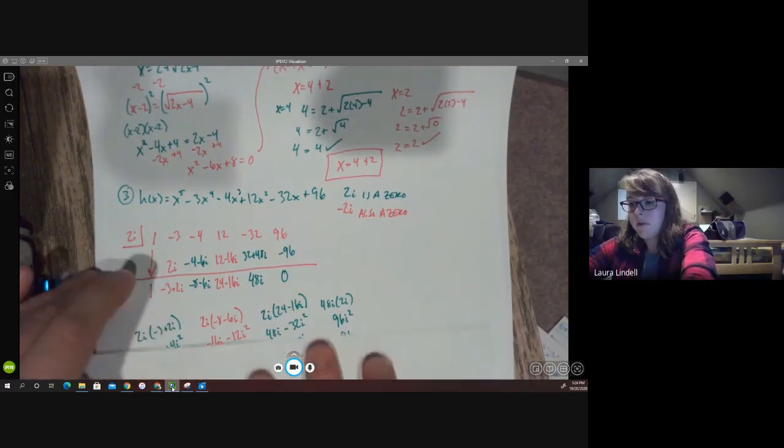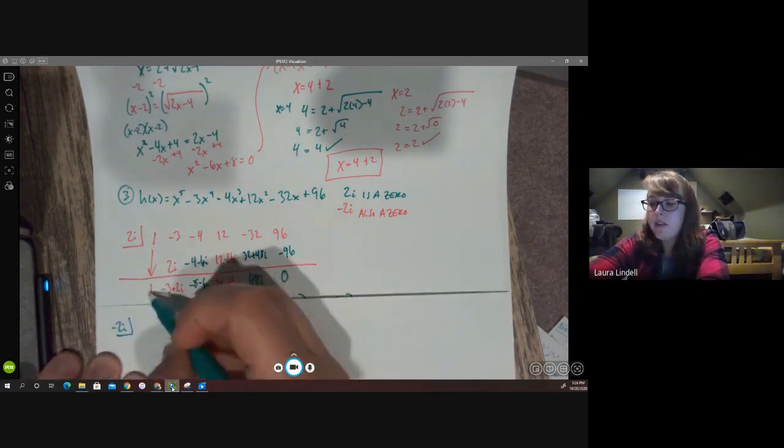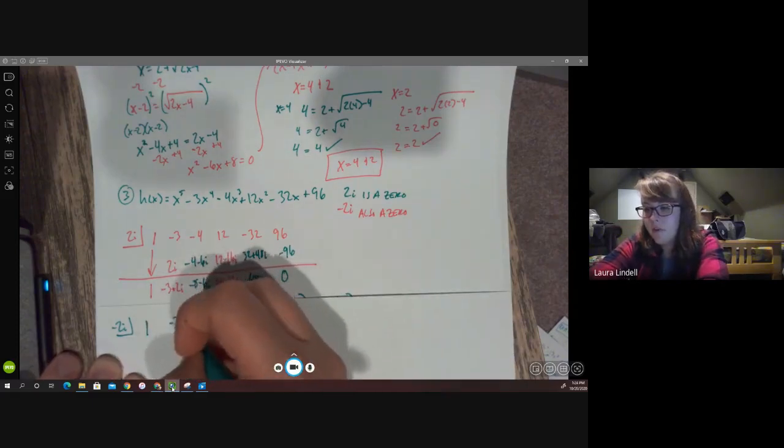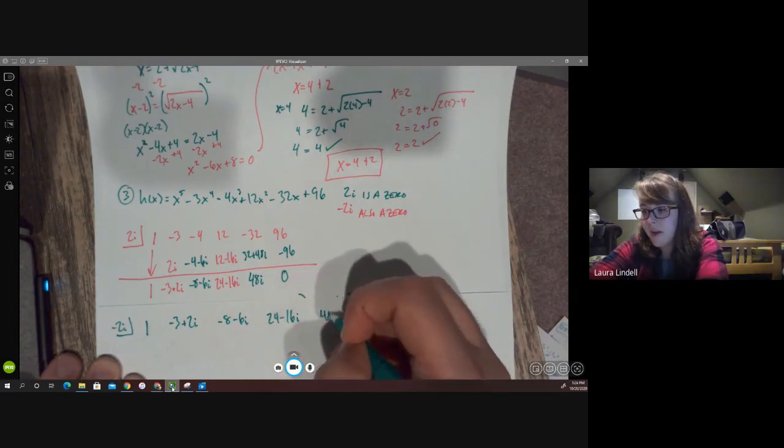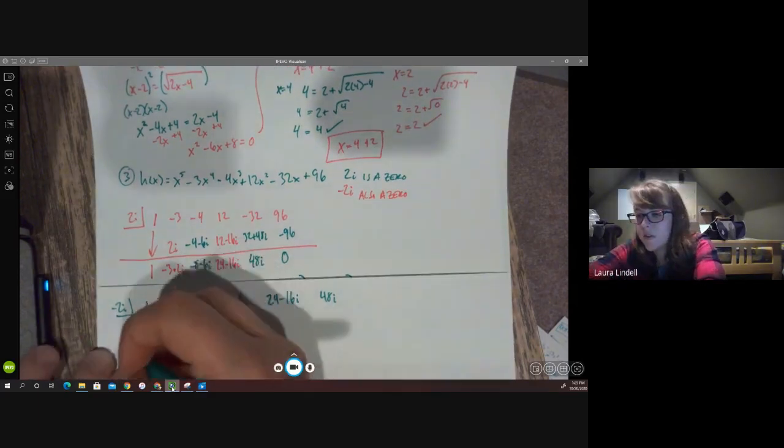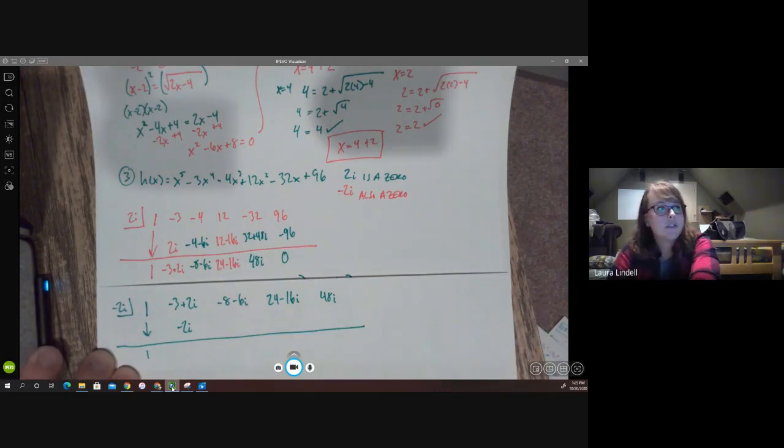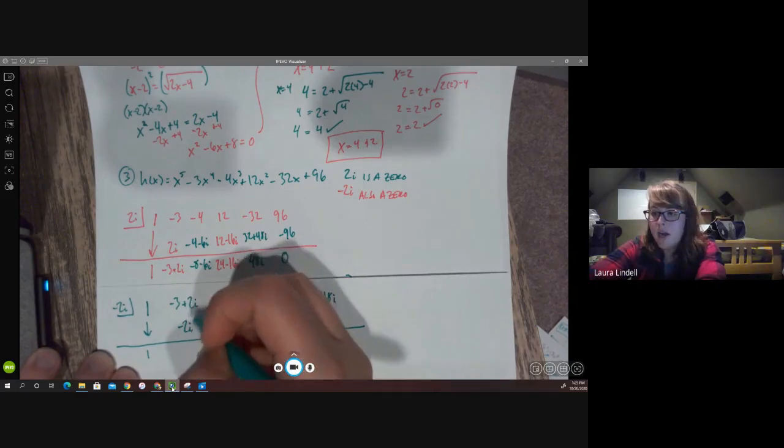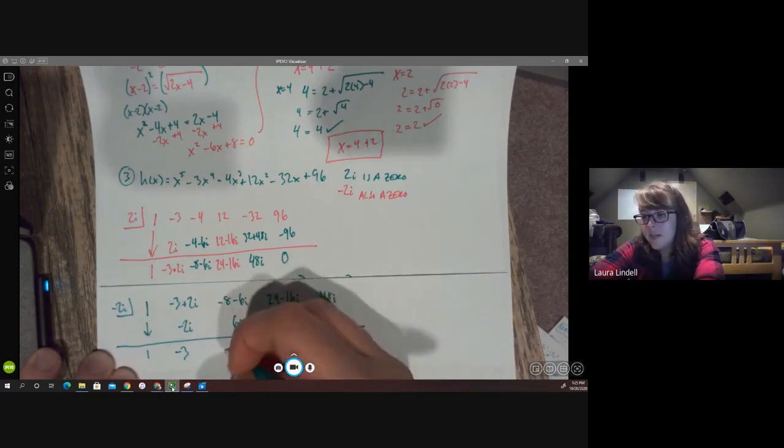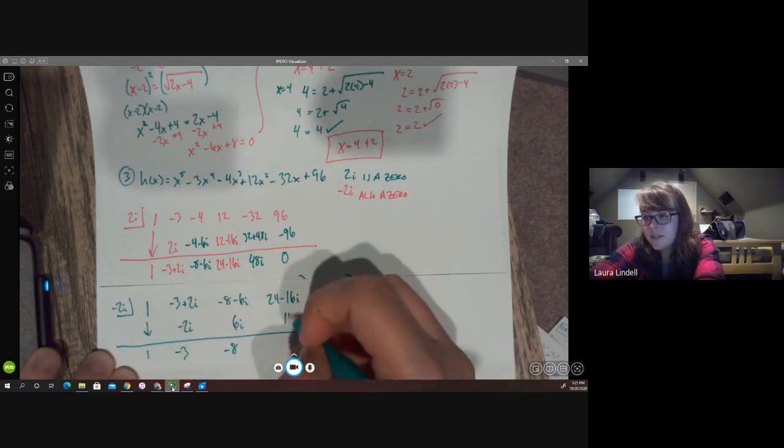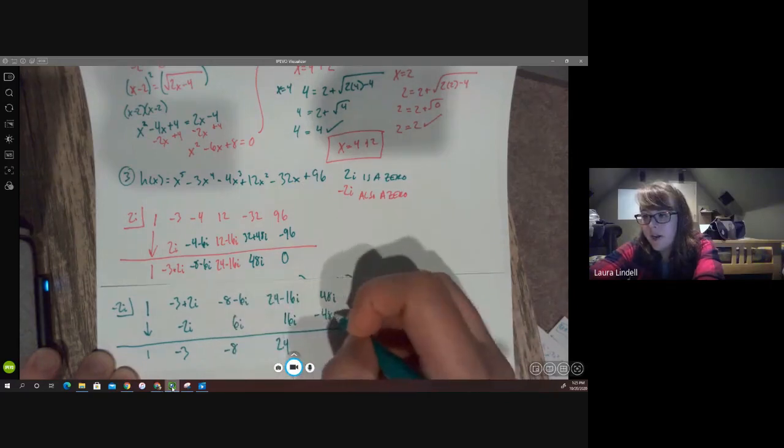So that's the first part. We found our new coefficients after factoring, or after dividing out that 2i. So now we're going to do it with negative 2i in the box instead. Let me grab another piece of paper here. And we're going to set up some more synthetic division. But this time we've got negative 2i in the box. And these are going to be my coefficients. So we have 1, negative 3 plus 2i, negative 8 minus 6i, 24 minus 16i, and 48i. We bring down the 1, 1 times negative 2i is negative 2i. And this time doing the synthetic division should be significantly easier. Because our i's cancel here, we get just negative 3. Negative 3 times 2i is positive 6i. The i's cancel and we get negative 8. Negative 8 times negative 2i is 16i. The i's cancel and we get 24. 24 times negative 2i is negative 48i. And so we get 0.